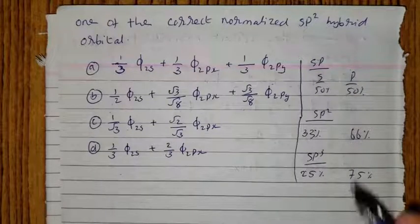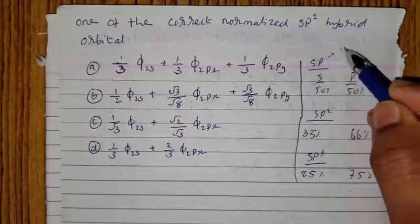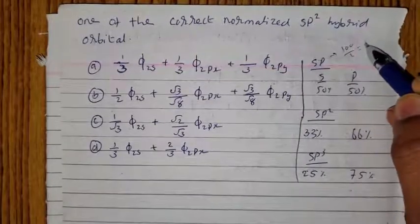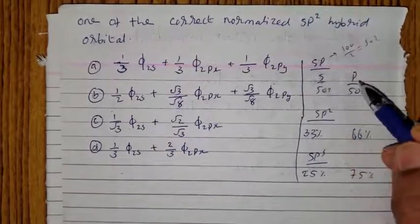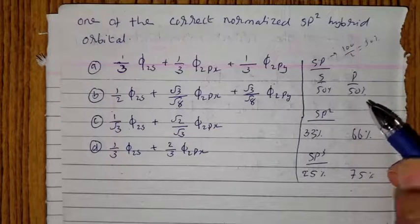On the right, two orbitals, one is 100 divided by 2, 50%. S orbital or P orbital character here.